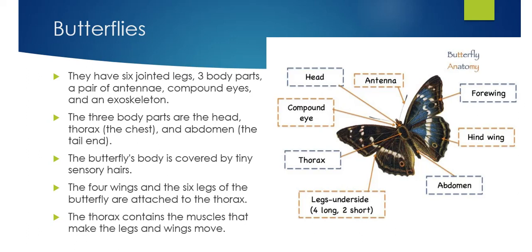An exoskeleton means having the skeleton on the outside of the body. For example, humans have the skeleton on the inside, and that's what helps us keep our form.